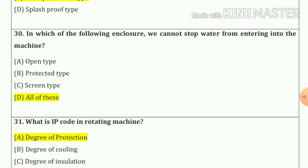Question number thirty: In which of the following enclosures can we not stop water from entering into the machine? So our answer is A, B and C — all of these.